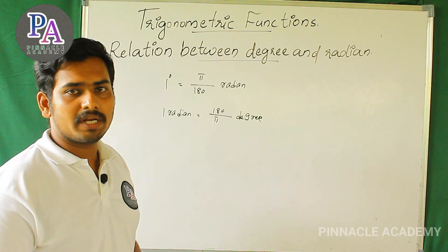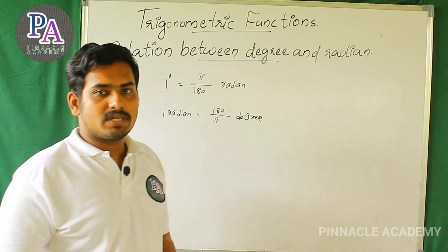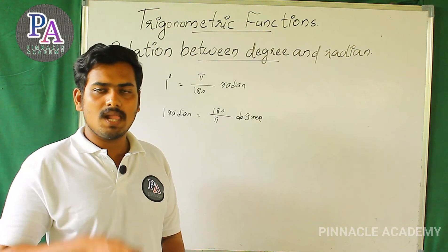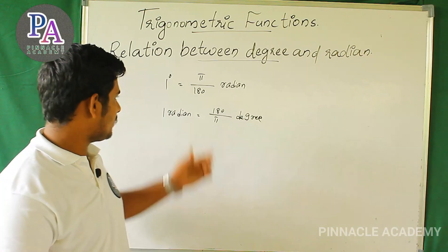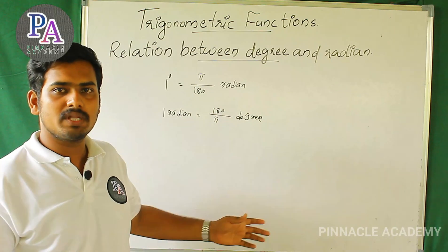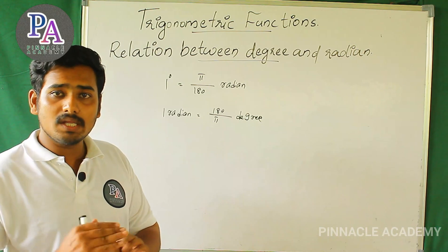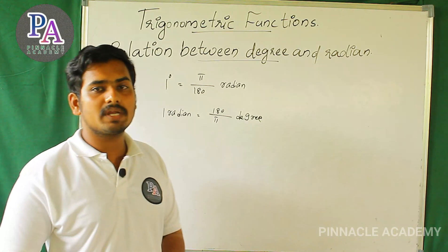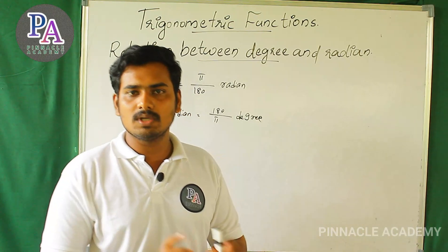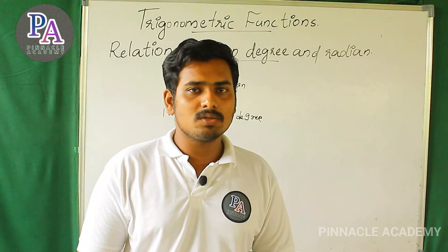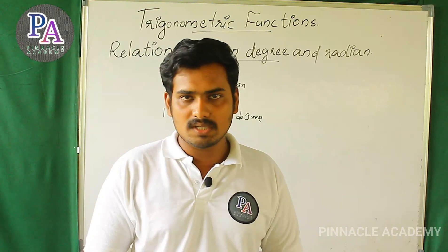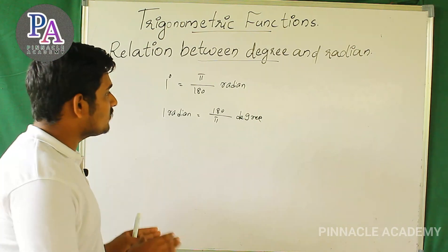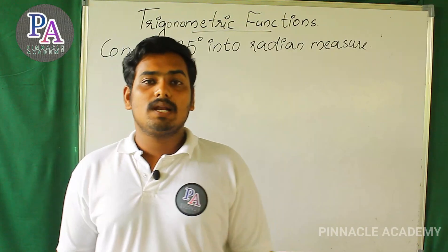We can convert the angle. We have two methods: degree and radian. If we have degree method, we can go to radian method by multiplying by pi by 180. If we have 1 degree, it is pi by 180. If we have 2 degrees, it is 2 times pi by 180. If we have 3 degrees, it is 3 times pi by 180. To convert radian to degree, we multiply by 180 by pi. Now let's talk about the relation between degree and radian.